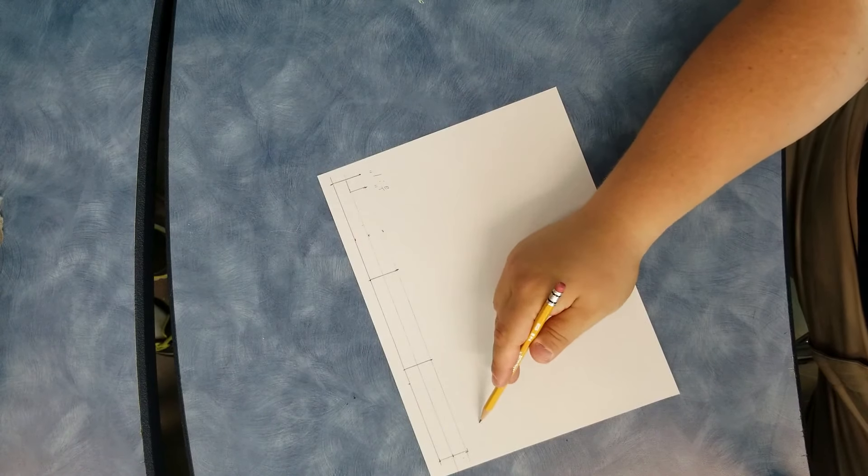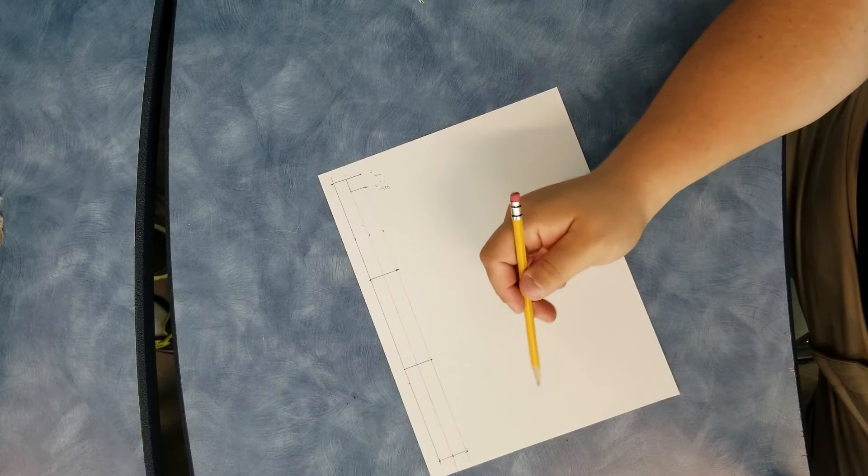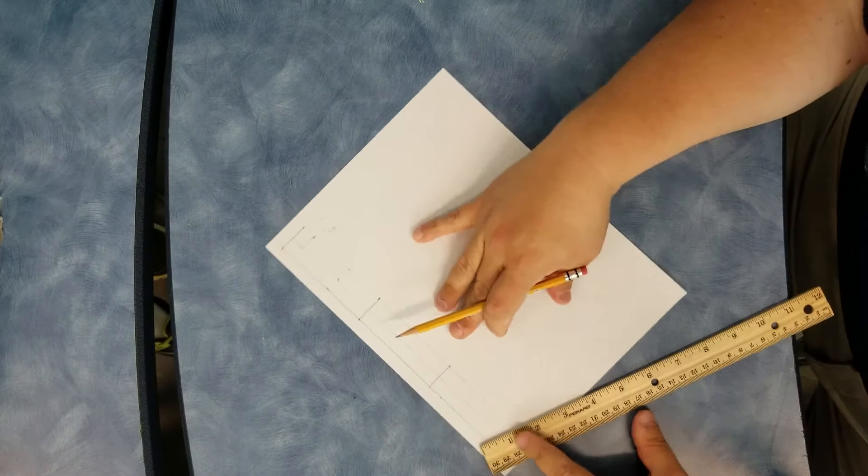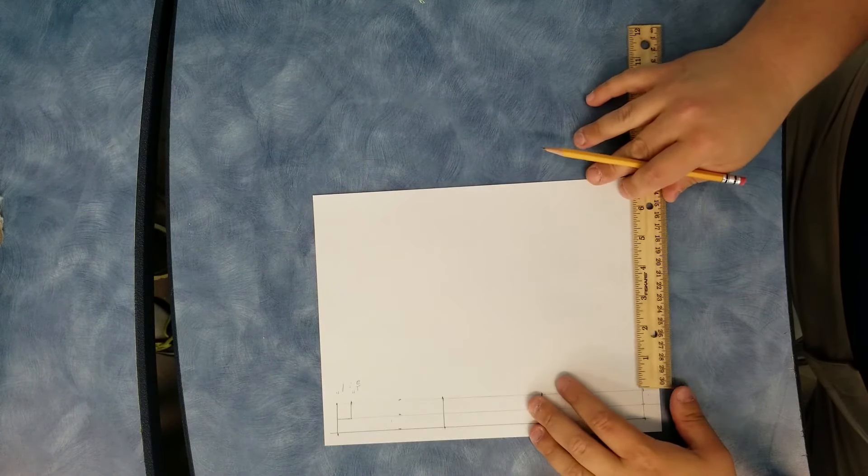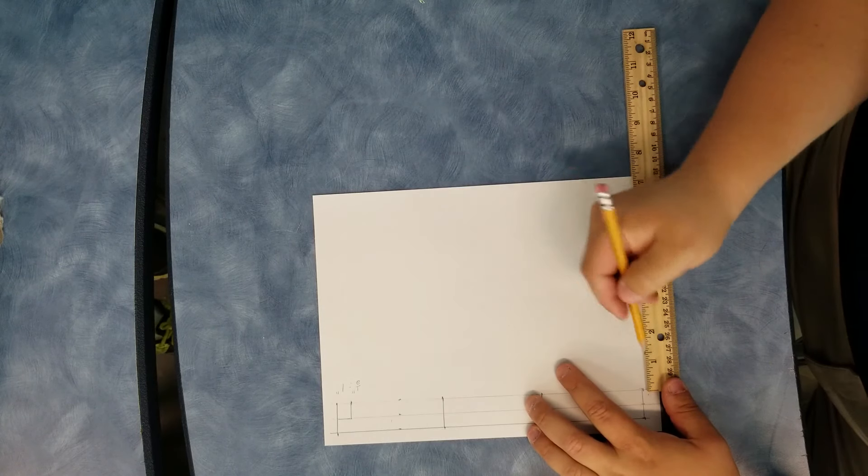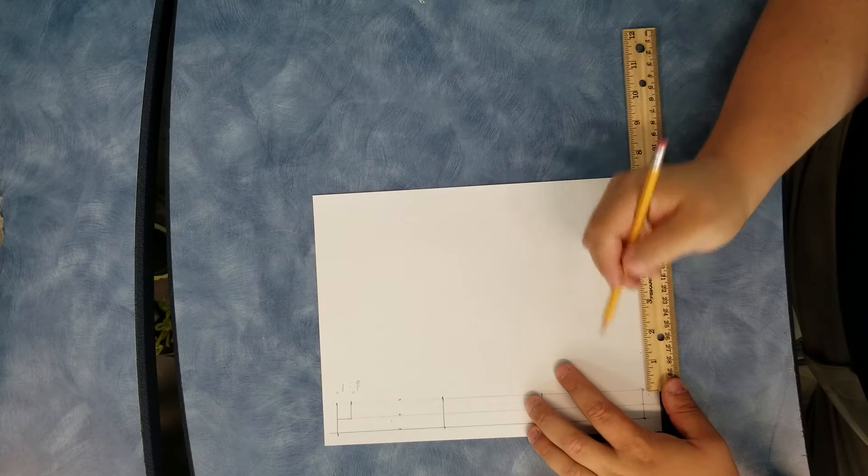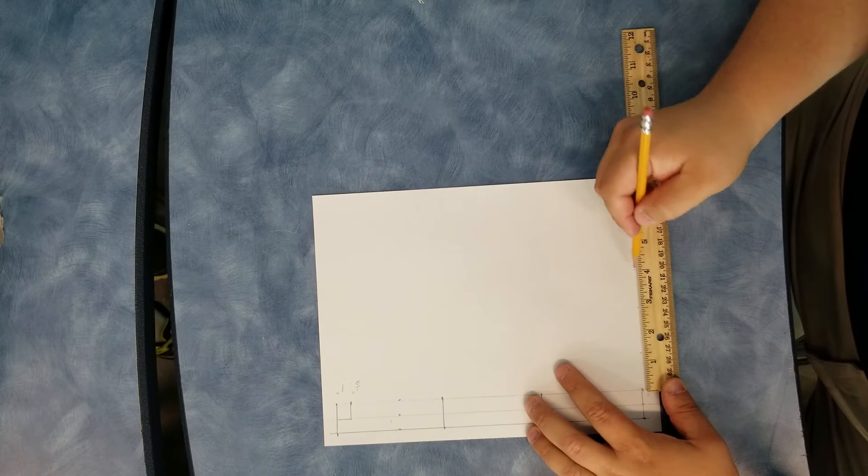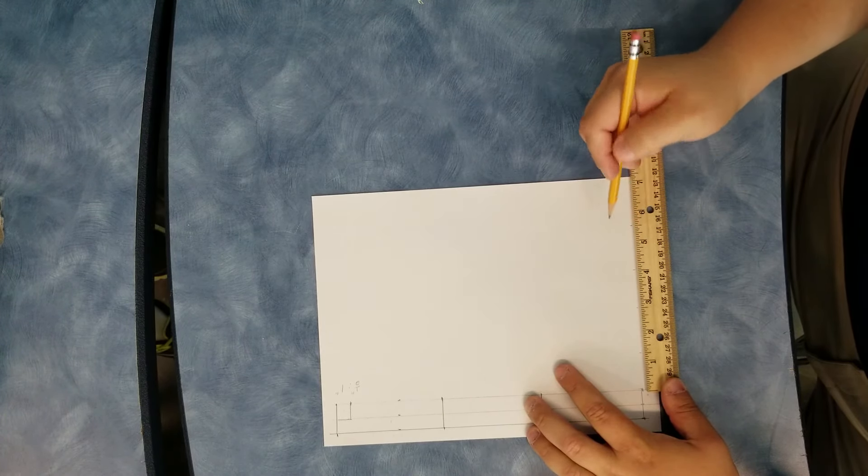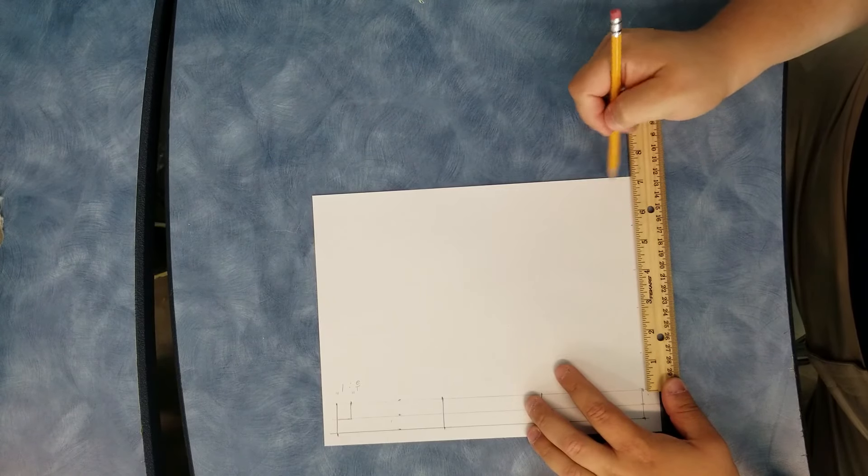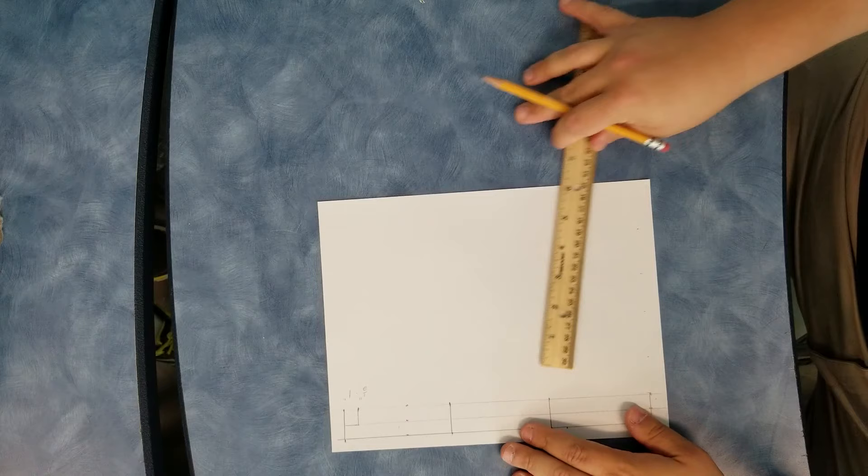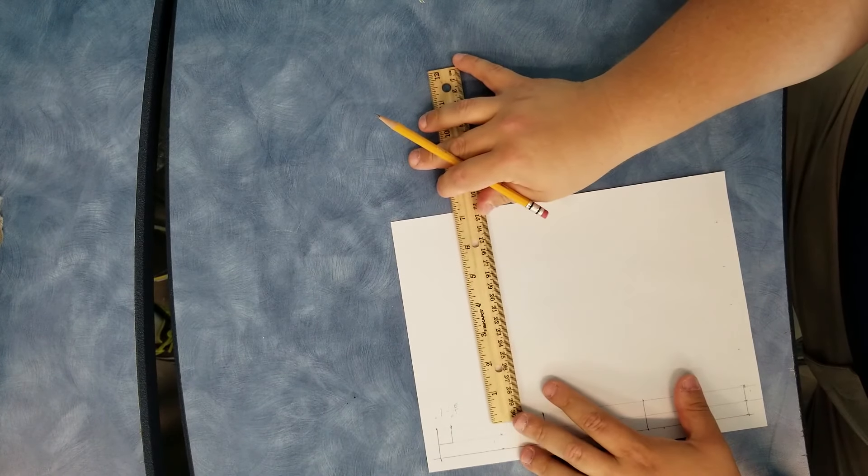So we need a 1¼ gap, 1½ gap, 1¼, 1½, and I'll do that on two sides. So go 1¼, light line, plus 1½, plus 1¼, plus 1½. So I have like an inch and ¾ down here. It's okay to have a little bit more of a margin in the bottom. And then I'll do that over here.